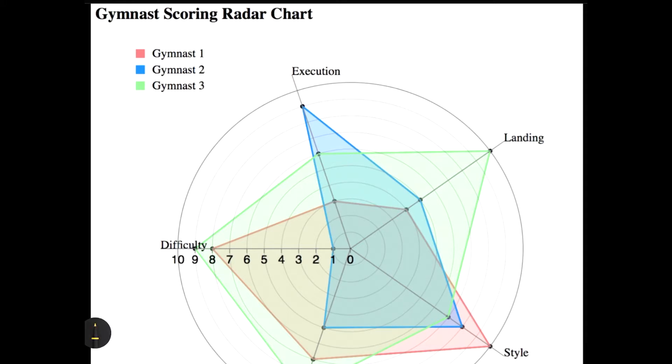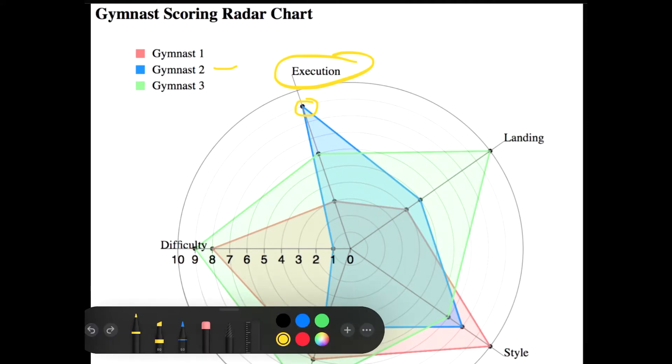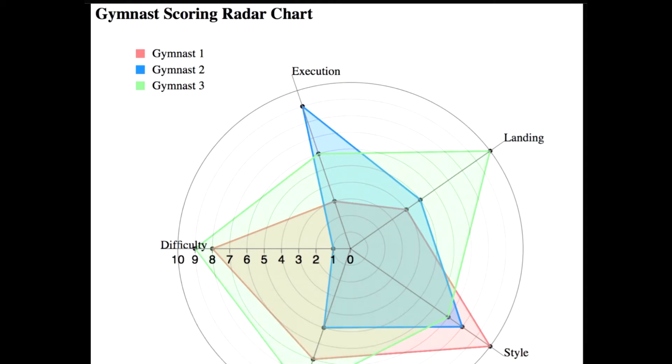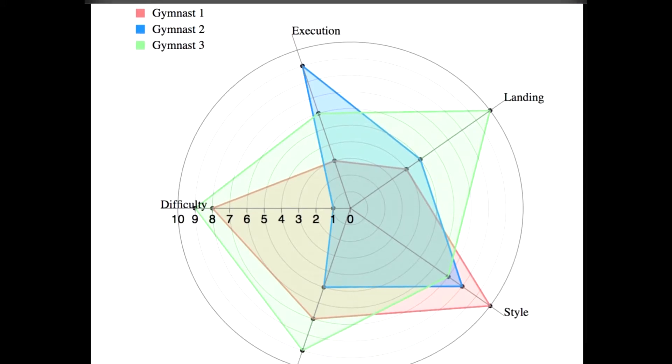The score which gymnast two has got in execution would still be nine compared to this data and this line, no matter if I draw this area in blue color or not. So this is basically just a different way of representing the same data. I'm letting you know this so that it doesn't come as a surprise for you in the exam.